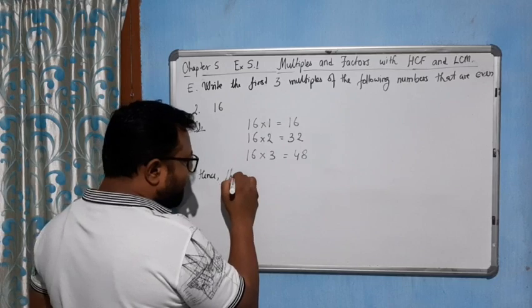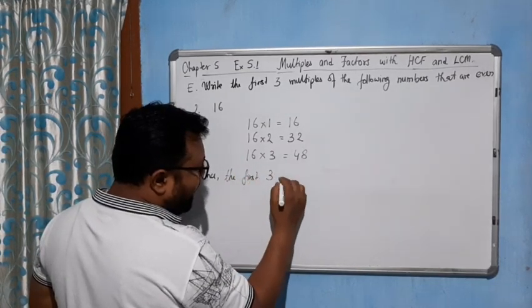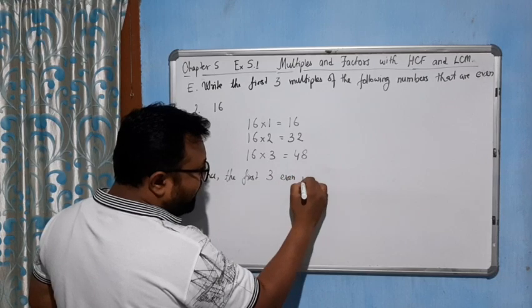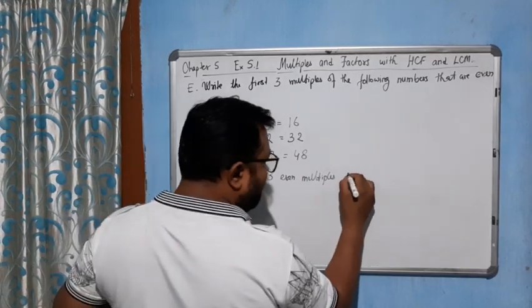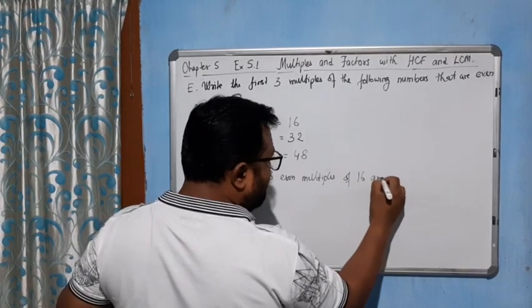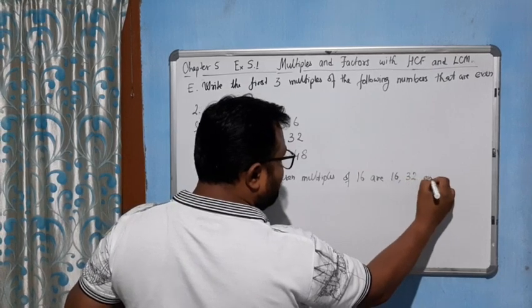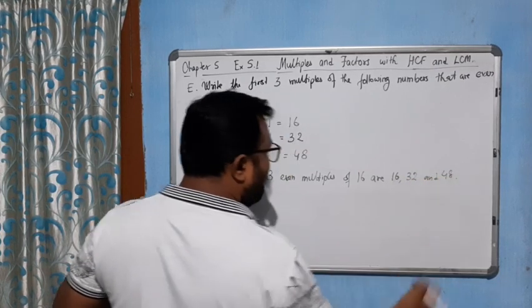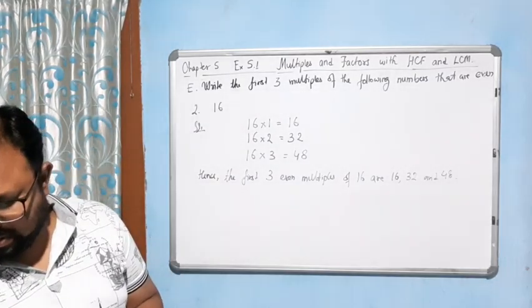Hence, the first three even multiples of 16 are 16, 32, and 48.